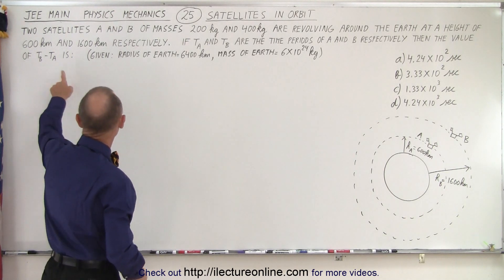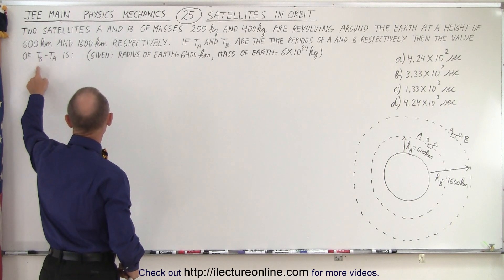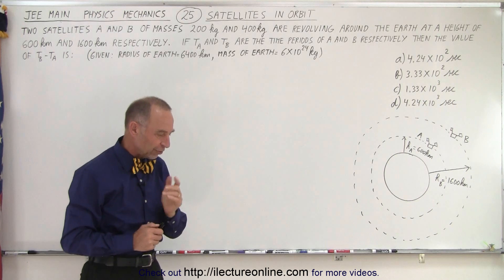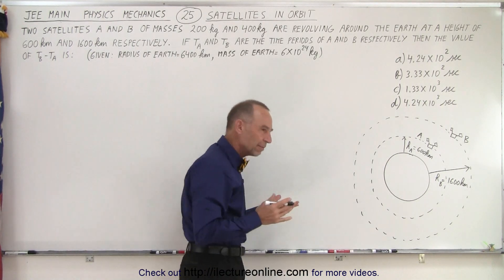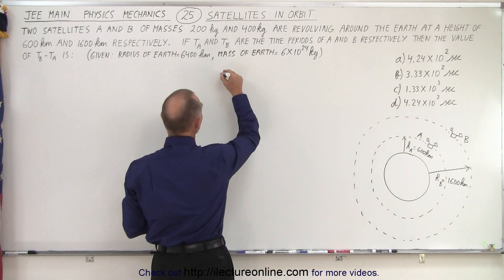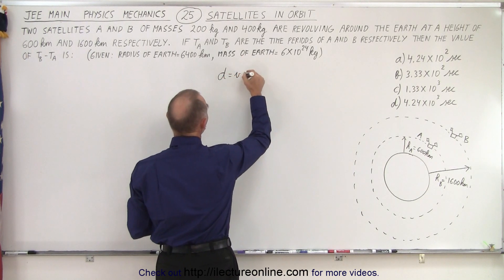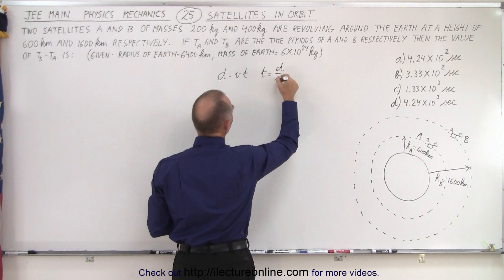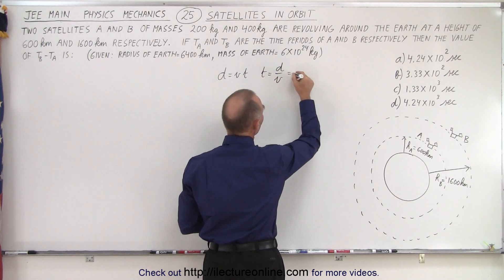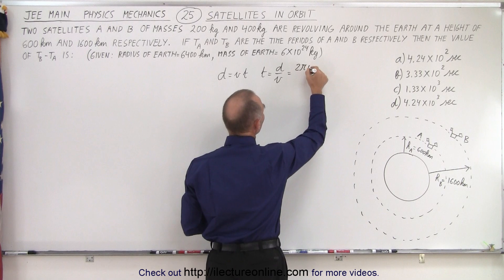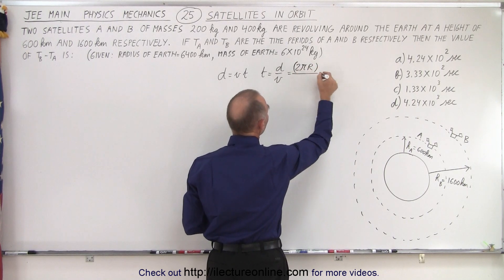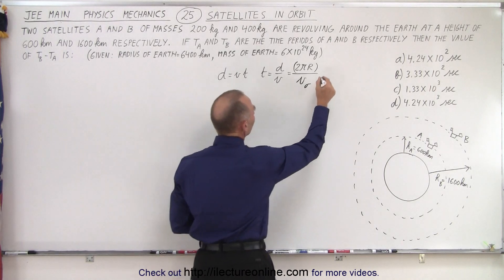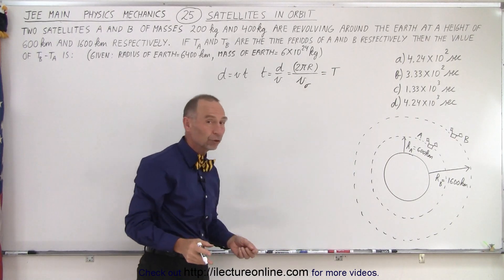What we're trying to find is the difference of the two periods, T_B minus T_A. The period can be found using the equation: distance equals velocity times time, so time equals distance divided by velocity. For satellites, that's equal to 2π times the orbital radius divided by the orbital velocity, which gives us the period for one revolution.